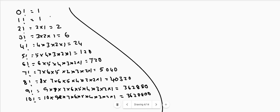5! is the product of the first 5 natural numbers: 1 × 2 × 3 × 4 × 5 = 120. 6! = 6 × 5! = 6 × 120 = 720. 7! = 7 × 6 × 5 × 4 × 3 × 2 × 1 = 5040, which is 6! × 7 = 720 × 7 = 5040.